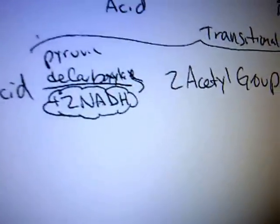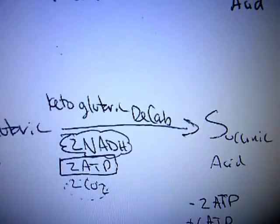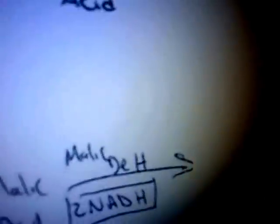Now we have 30 ATPs, because each NADH is going to give us three, and we have 10 that we have acquired, two from the PGALs, two from the pyruvic decarboxylation, two from the isocitric dehydrogenation, and two from the ketoglutaric decarboxylation. And then another two from the malic dehydrogenation.